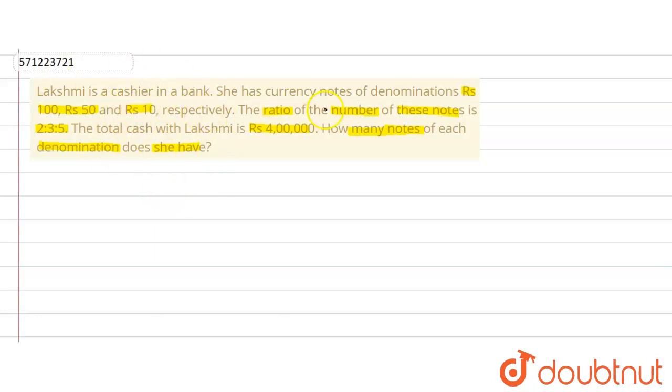Whenever such types of questions come with a ratio, something like ratio is given, then what we do is we assume the denomination or the number of notes with different denominations to be 2x, 3x and 5x.